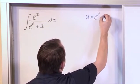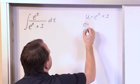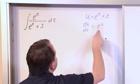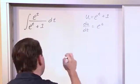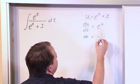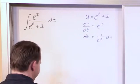u is equal to e to the t plus 1. So then du dt is e to the t because this is indestructible. So the derivative is itself, the derivative of this is 0. And then dt is equal to 1 over e to the t du. Just moving dt over there, moving this guy over there.